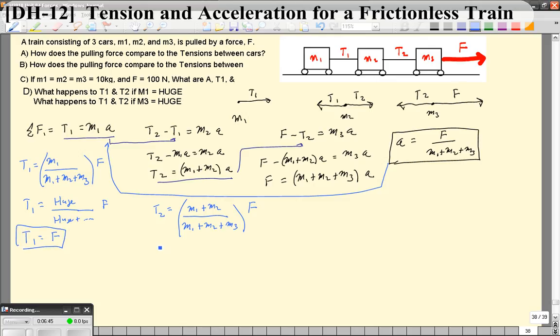Now, as far as tension 2, you can imagine, well, if M1 is huge, you're going to wind up with huge over huge again, and you're going to have a tension that is also essentially the same as the pulling force.